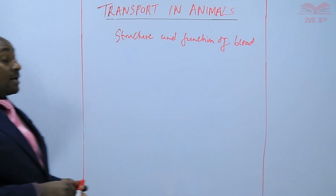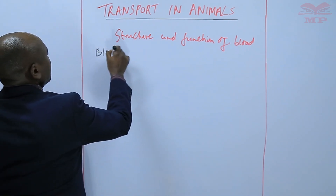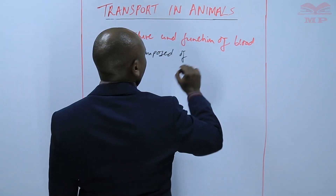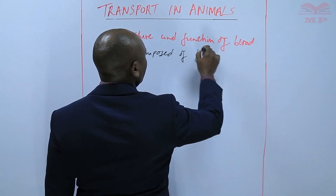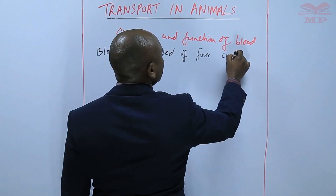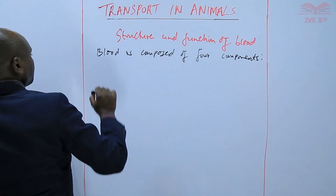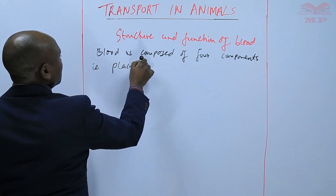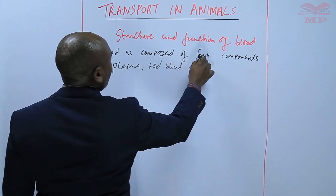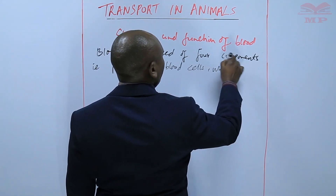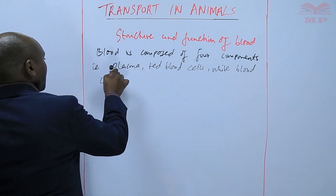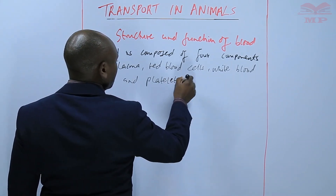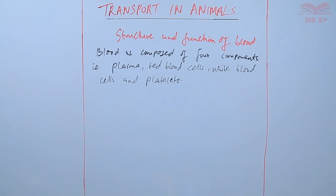On the structure and the function of blood, we can say that our blood is composed of four parts or four components. And these are the four components: we have the plasma, we have the red blood cells, white blood cells, and platelets. So those are the four components that make the blood.